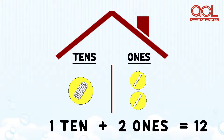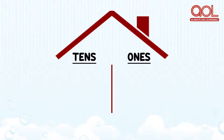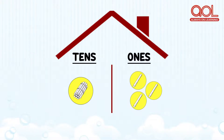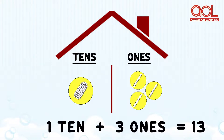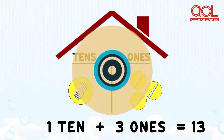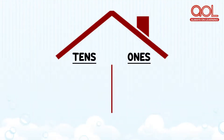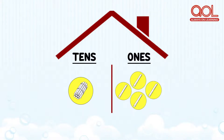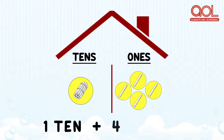Now, one ten and three ones will make number thirteen. Let's see the next number. We have one ten and four ones — one ten and four ones make number fourteen.